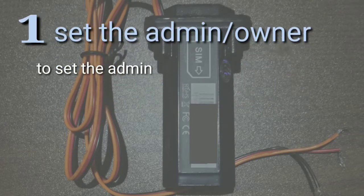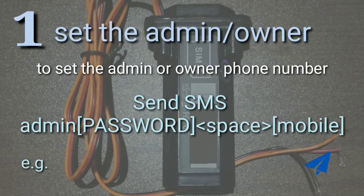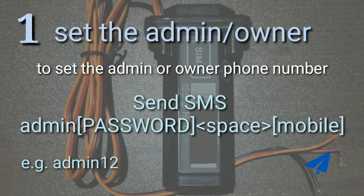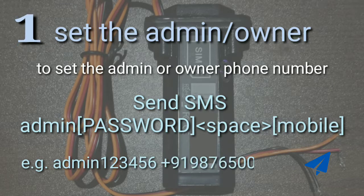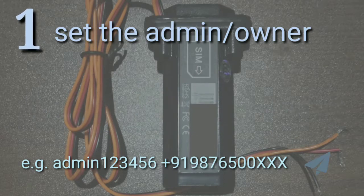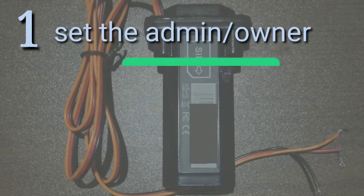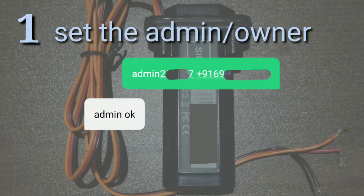To set the admin or owner phone number, write SMS: admin, then without leaving space write your password, and then leave a space followed by your mobile number. Send this SMS to the device. The device must respond through an SMS saying: admin OK.